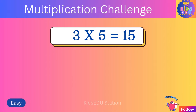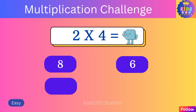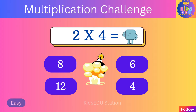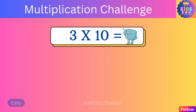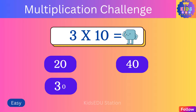Five times ten is fifty. What is four times three? Fifteen, twelve, eighteen, twenty-one. Four times three is twelve. What is three times five? Twenty, twenty-five, ten, fifteen.